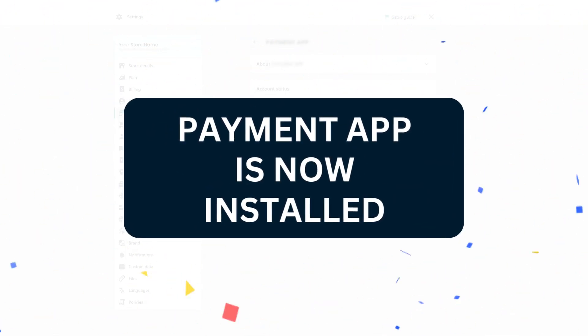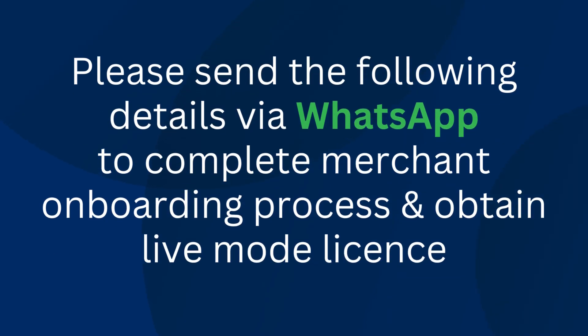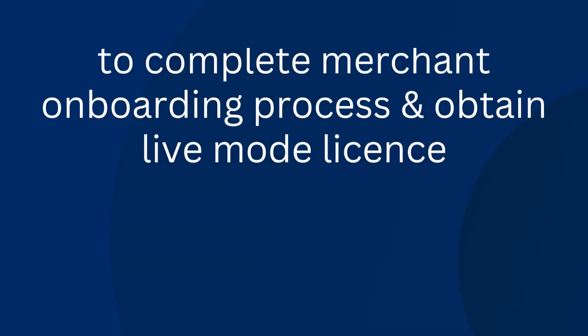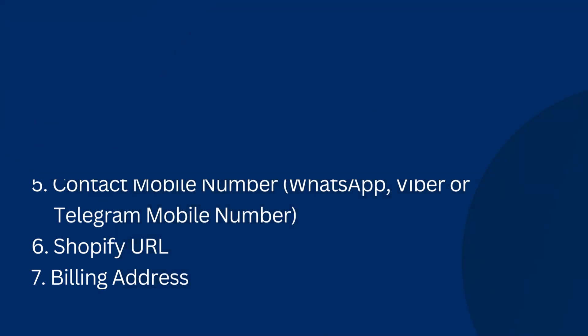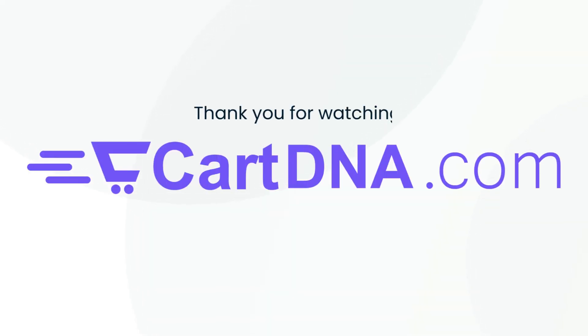Your payment app is installed. Please send the following details via WhatsApp to complete the merchant onboarding process so we can activate the live mode of the application: 1) Payment gateway application name (e.g., Bancontact), 2) Company name (optional), 3) Contact name (first and last name), 4) Contact email, 5) Contact mobile number (WhatsApp, Viber, or Telegram), 6) Shopify URL, 7) Billing address. Thank you for watching.